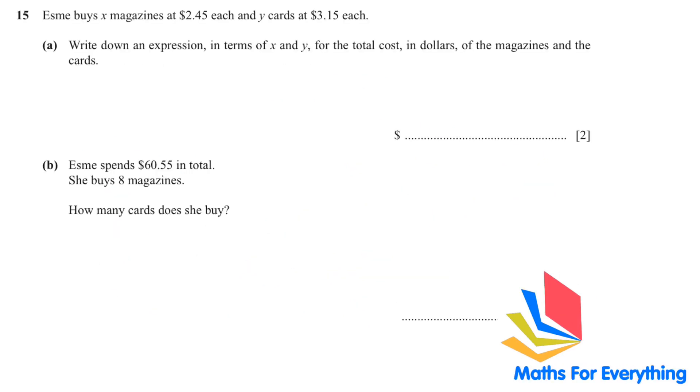Question 15. SME buys X magazines at $2.45 each and Y cards at $3.15 each. Write down an expression in terms of X and Y for the total cost in dollars of the magazines and the cards. So 2.45 times X is magazines and cards are 3.15 times Y. So this is the expression we have.